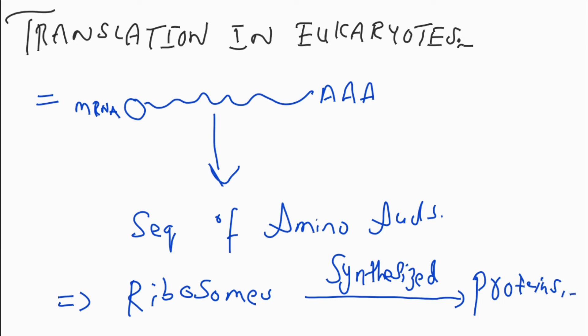Translation involves translating the sequence of messenger RNA into a sequence of amino acids. It is the process in which ribosomes synthesize proteins in the endoplasmic reticulum or cytoplasm after the process of transcription.